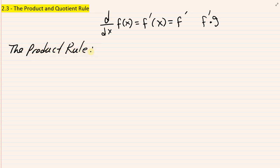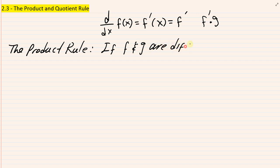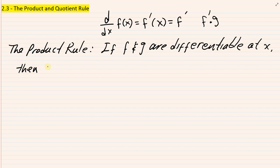The product rule goes like this using the prime notation. If f and g — so we have two functions — f and g both must be differentiable. Remember, differentiable means they have derivatives and we can evaluate the derivative, differentiable at x where x is some arbitrary number. Then so is the product.